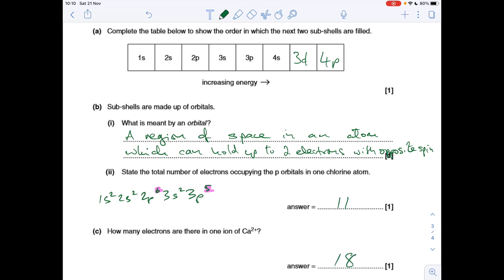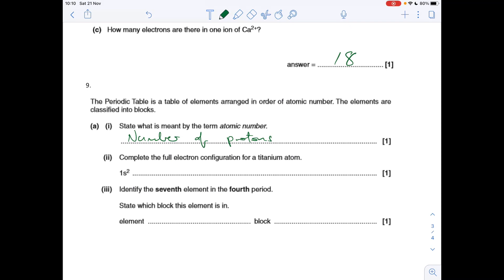First part of 9a: the atomic number is the number of protons. The full electron configuration for a titanium atom: it's 22 electrons in the atom, so there it is.